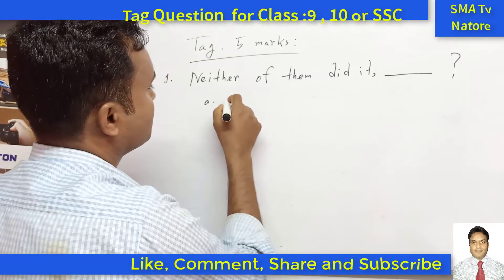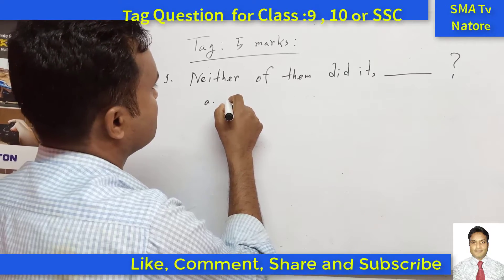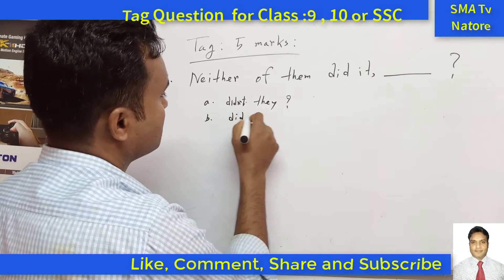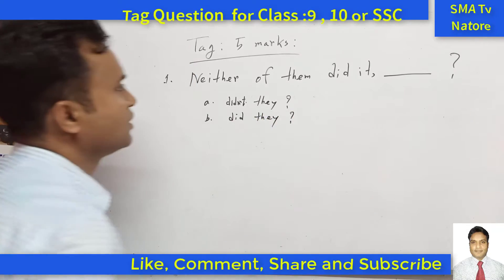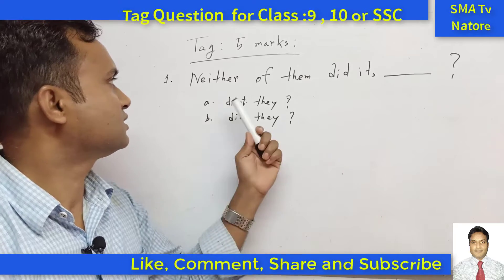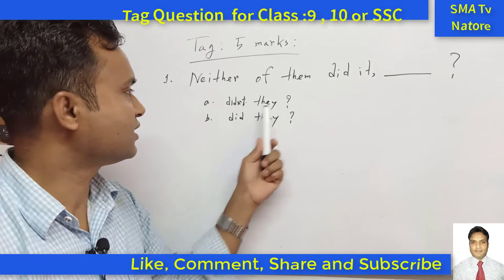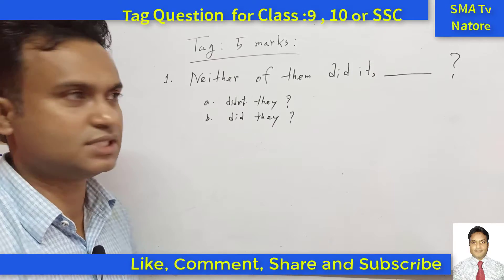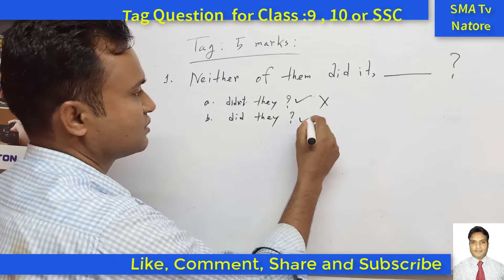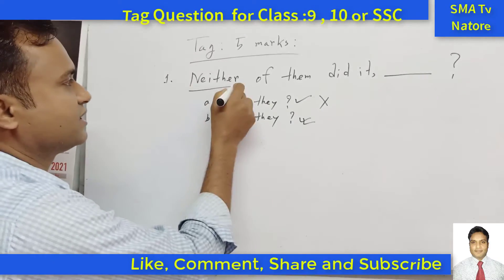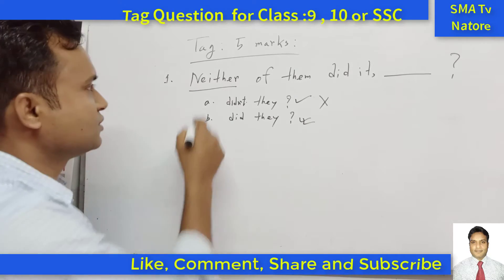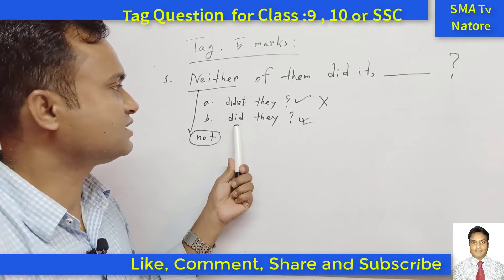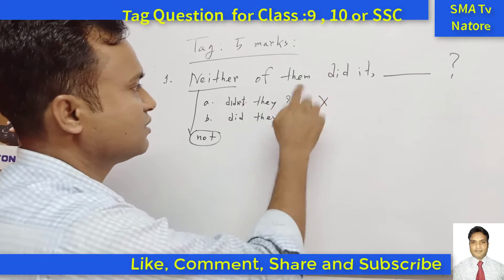Next, what is the answer? Neither of them did it — so what is the correct tag, 'didn't they' or 'did they'? You are saying 'didn't they' — no, that is wrong. The correct answer is 'did they.' Why? Because 'neither' already indicates a negative meaning, so we don't need another 'not.' Therefore the correct tag here is 'did they.'